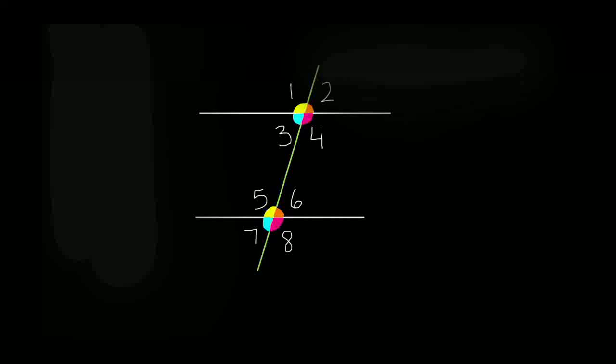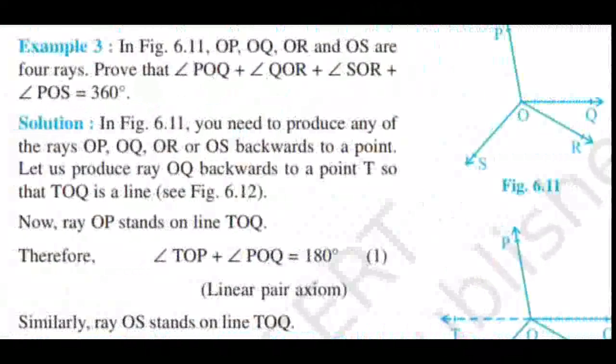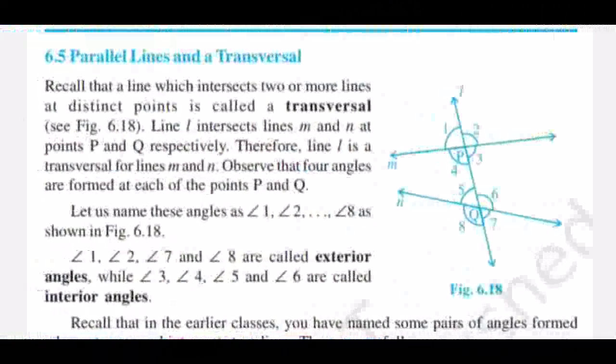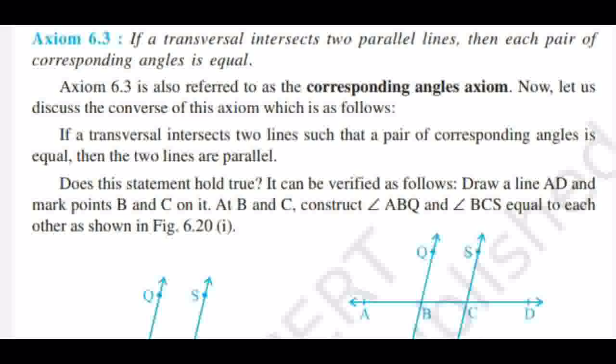Hello, dear students. Let's start today's class with some theorems. The first axiom is: if a transversal intersects two parallel lines, then each pair of corresponding angles is equal. That is one axiom.